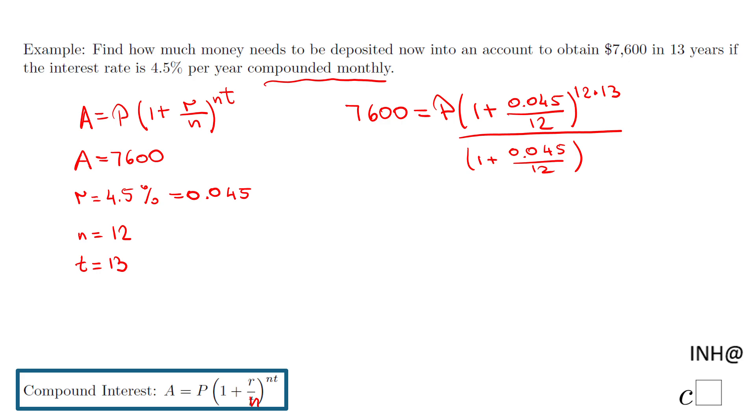So yeah, these two cancel out. That's the reason we divide, we're going to divide by the same thing here: 1 plus 0.045 over 12 to the power of 156.